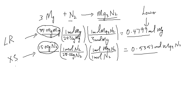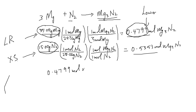To answer the question — remember, the question asks how many grams of magnesium nitride can be made from this reaction — we have to use the moles from the limiting reactant calculation and convert to grams. So we start with 0.4799 moles of Mg₃N₂.